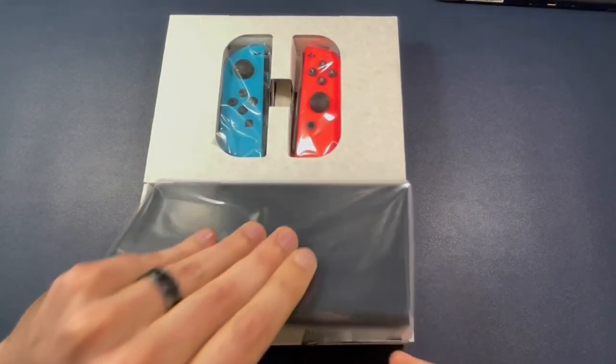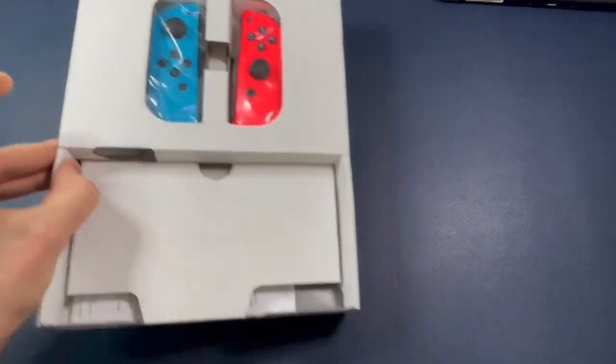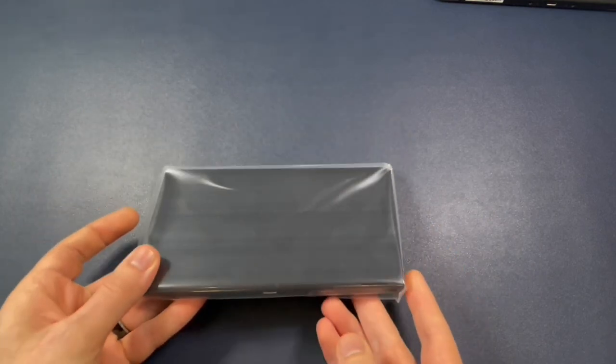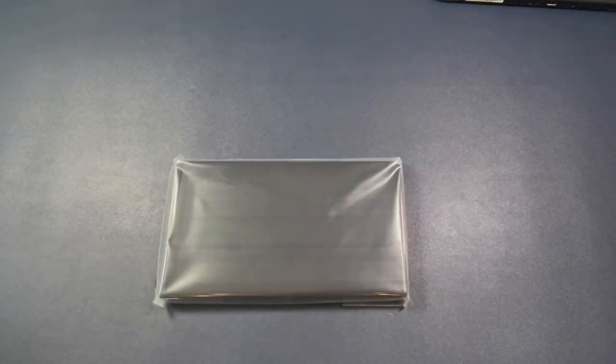Now I'm going to show you how to install this tempered glass screen protector on your Nintendo Switch OLED. So the first thing you want to do, you do not want the Joy-Cons on your Nintendo Switch. So if you have the Joy-Cons on, take them off. Super easy. Just a couple steps.